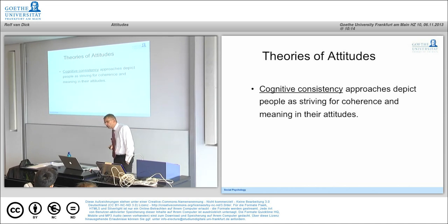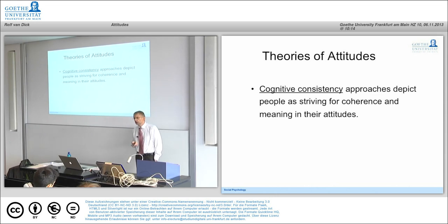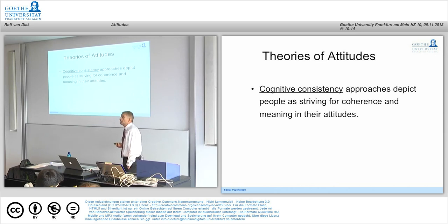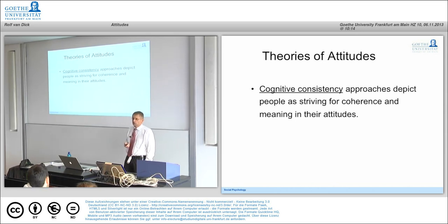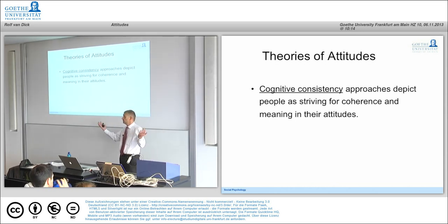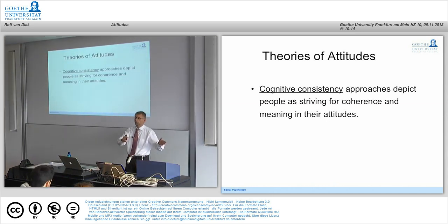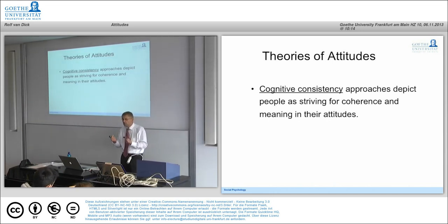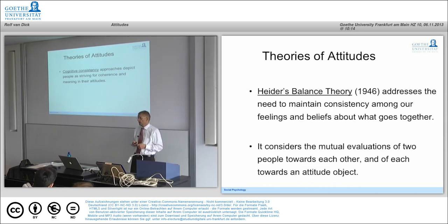The next approach is cognitive consistency. We will discuss two approaches: balance theory and the theory of cognitive dissonance. They depict people as striving for coherence and meaning in their attitudes — we typically don't want to hold two contradicting attitudes, or hold a positive attitude about something but not act on it. We strive for coherence in our set of attitudes and behaviors.